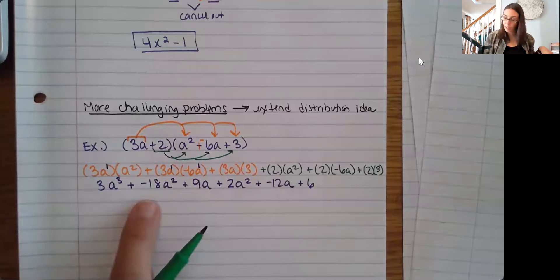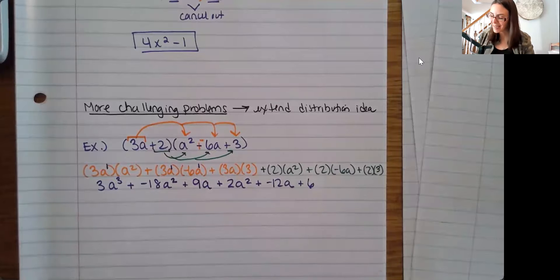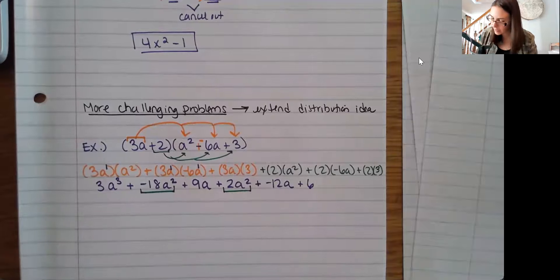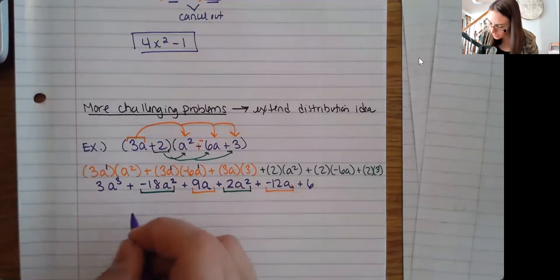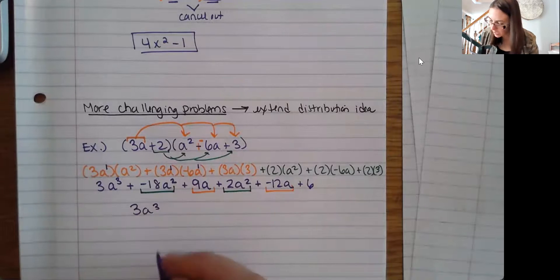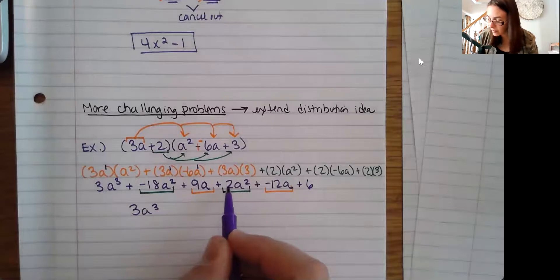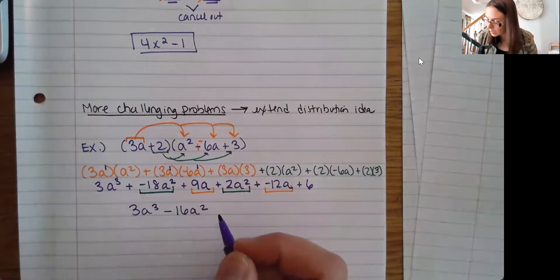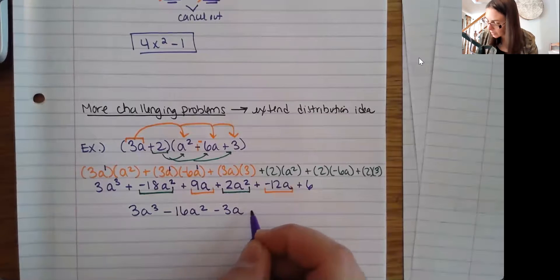I'm going to check my notes real quick to make sure I don't make a mistake before moving on. Now combining like terms: I see a squared terms here and here, and another like term pair. The 3a cubed comes down. For the squared terms: negative 18 plus 2 is negative 16, so negative 16a squared. Then 9 plus negative 12 is negative 3, so minus 3a. And bring down that plus 6. Final answer: 3a cubed minus 16a squared minus 3a plus 6.